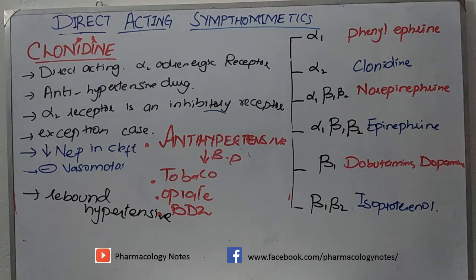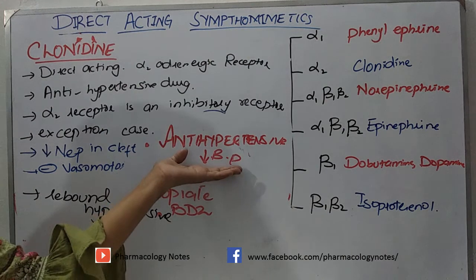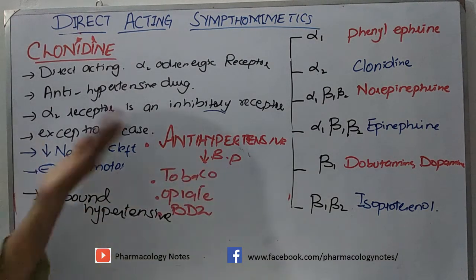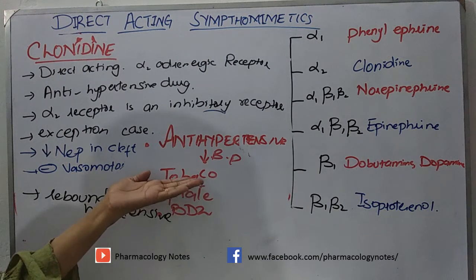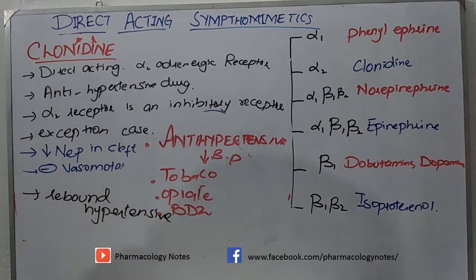To summarize: clonidine stimulates alpha-2 adrenergic receptors. Alpha-2 is present presynaptically, and when activated, it causes decreased norepinephrine in the synaptic cleft, reducing stimulatory action and reducing blood pressure. This makes it a useful drug for arterial hypertension. It is also used for tobacco cessation, opioid withdrawal, and benzodiazepine withdrawal. But withdrawing clonidine abruptly will cause rebound hypertension.